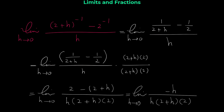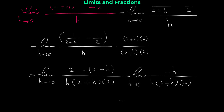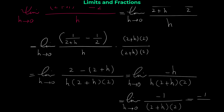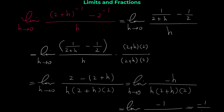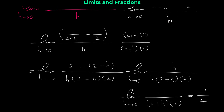We have a common term h between the top and the bottom. Canceling h gives the limit of negative 1 over (2 + h) times 2 as h approaches 0. Plugging in 0 for h gives negative 1 over 2 times 2 = negative 1 over 4. So the limit is negative 1/4.